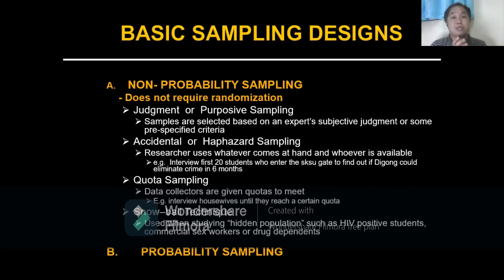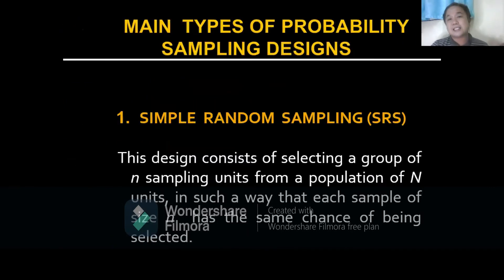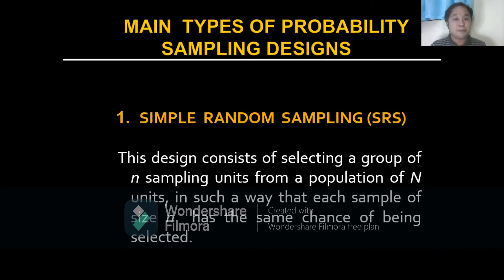The snowball technique is used with hidden populations such as HIV-positive students, commercial sex workers, or drug dependents. Now let's proceed with probability sampling design. The main types include: number one, SRS or simple random sampling, which consists of selecting a group of sampling units from a population in such a way that each sample of size n has the same chance of being selected.